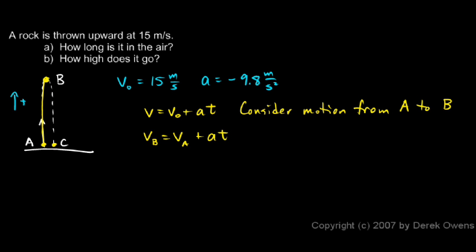And when I write it this way, I know the velocity at A, that's my 15 meters per second. I know the velocity at B is zero. I know the acceleration, so I can find the time. And that will be the time for the first half of the flight from A to B. And I could put numbers in here and solve for t.